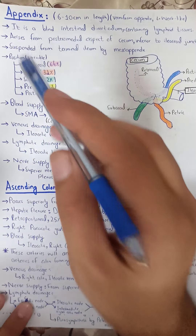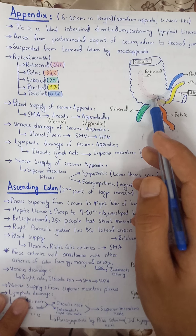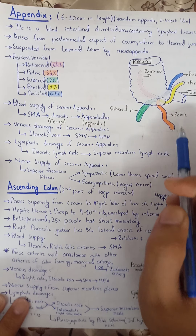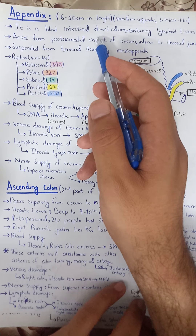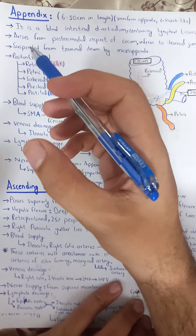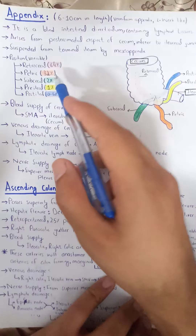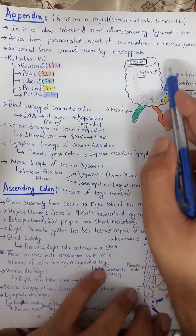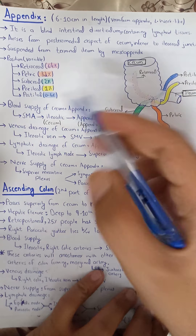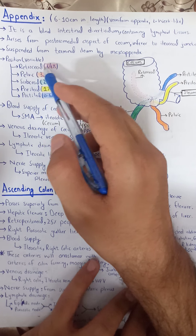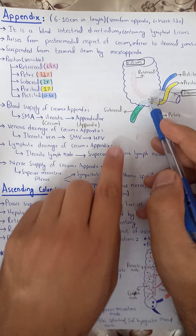The vermiform appendix is 6 to 10 cm in length. 'Vermiform' comes from the Latin word for worm-like. It is a vestigial diverticulum — a blind extension from the cecum — containing lymphoid tissue. It is suspended from the terminal ileum by the mesoappendix. Its position is variable, but in 64% of cases it is retrocecal, meaning posterior to the cecum.